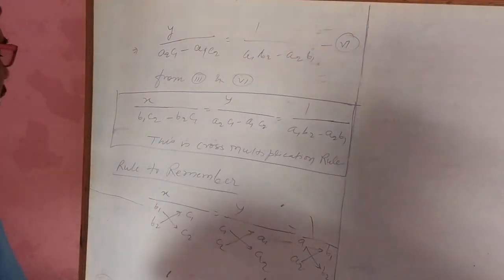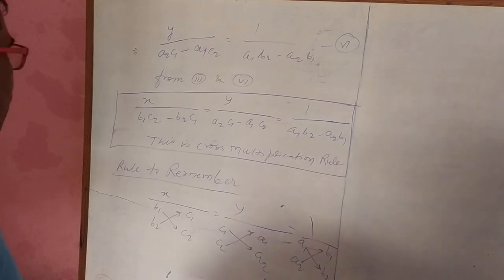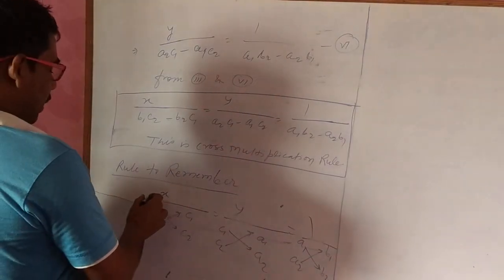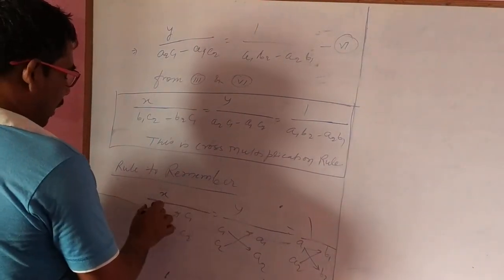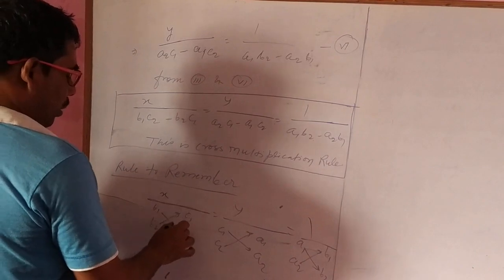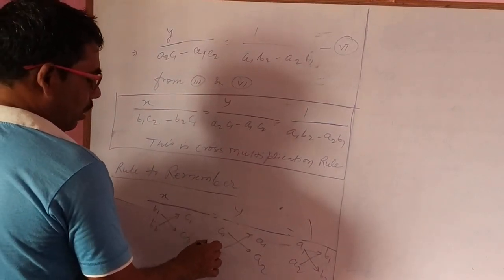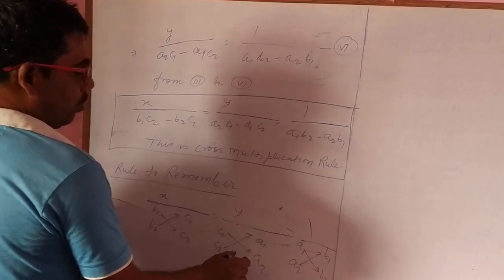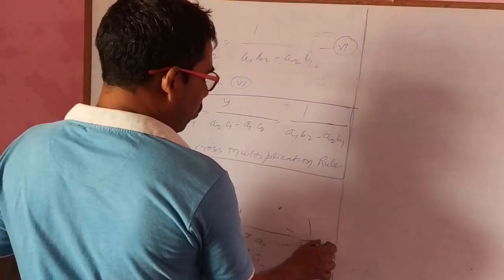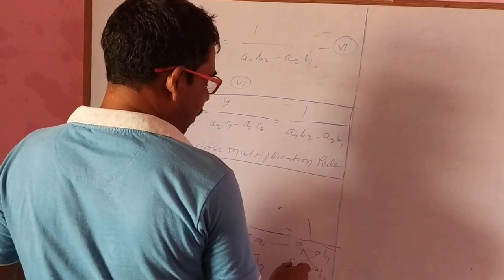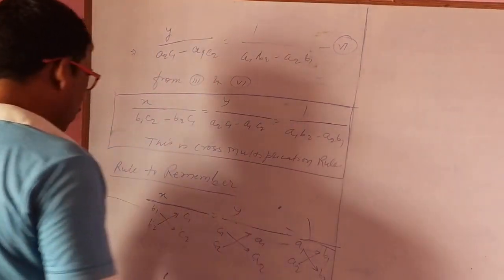How can you remember this? For this, we can write x, this b1b2, c1c2. Again, y, this c1c2, a1a2. This equal to 1 by a1a2b1b2. How can you write this?